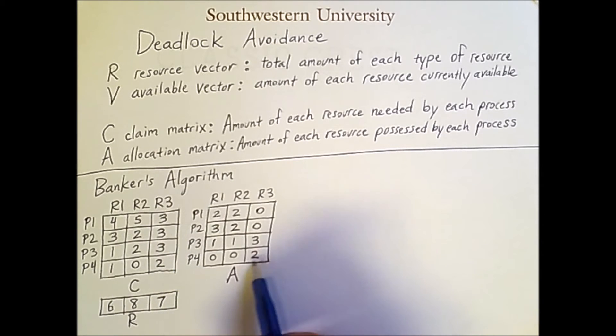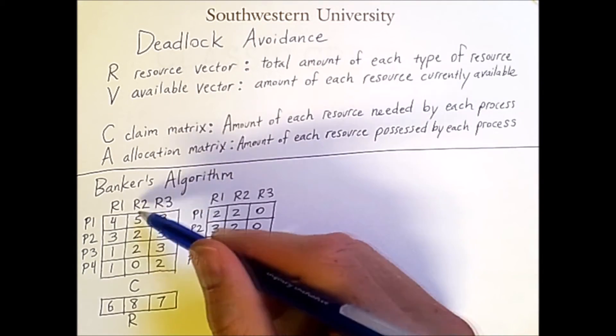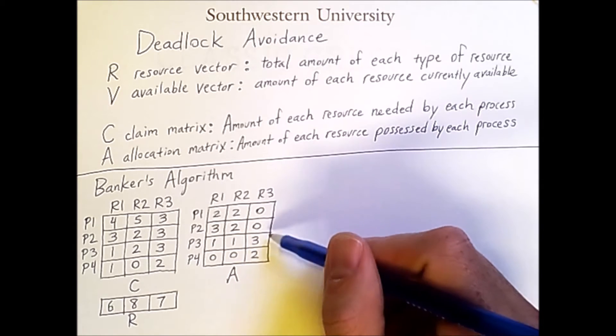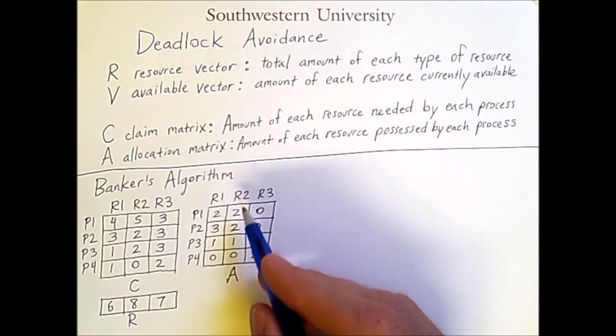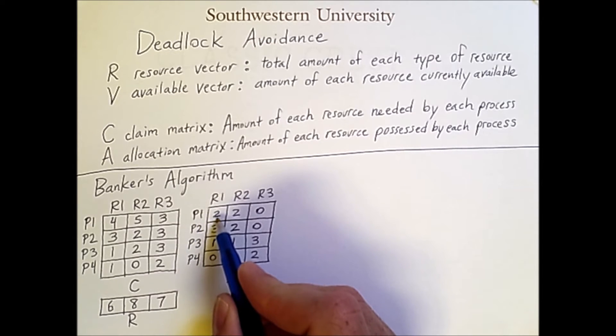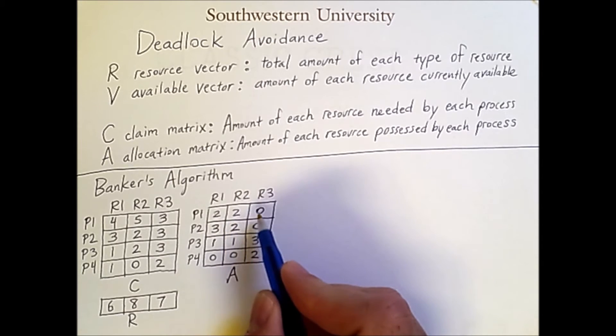Now, this matrix is the allocation matrix. So this is going to constantly change as the processes execute. This information is fixed for each process that enters the system, and this resource vector is simply fixed for the system. But the allocation matrix says, for example, that process 1 currently has 2 units of resource type 1, 2 units of resource type 2, and 0 units of resource type 3.